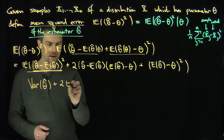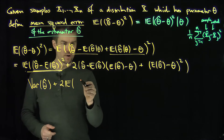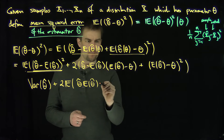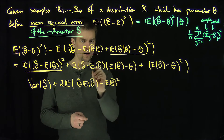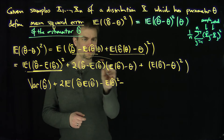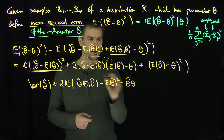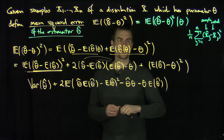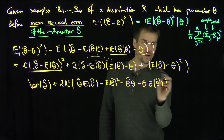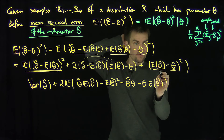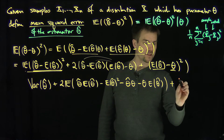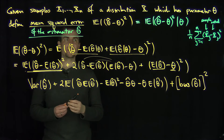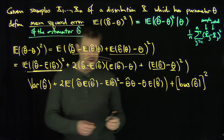Then I have plus twice the expected value of the cross product, multiplying everything out: two times expected value of theta-hat times expected value of theta-hat, minus expected value of theta-hat squared, minus theta times expected value of theta-hat, plus theta times expected value of theta-hat. And finally, the expected value of the last term — expected value of theta-hat given theta minus theta — is the bias squared. So the mean squared error is the variance plus the bias squared plus the middle cross term.